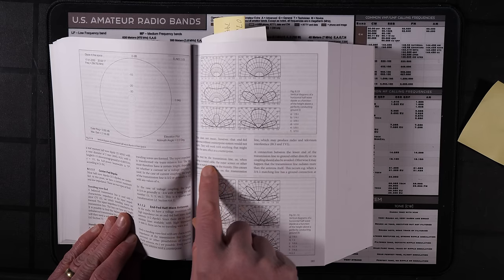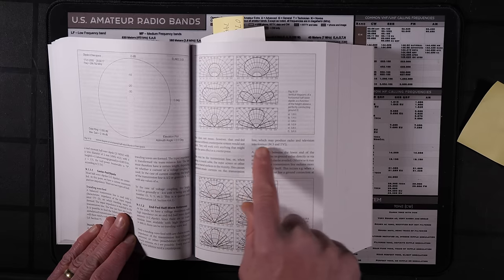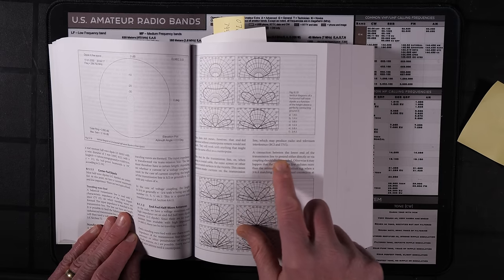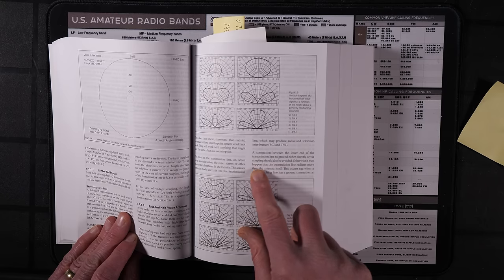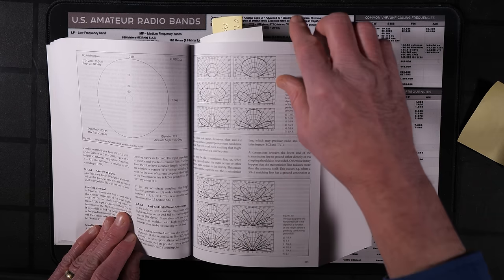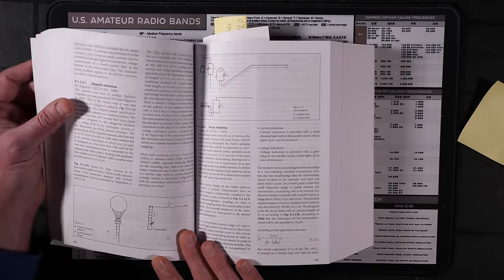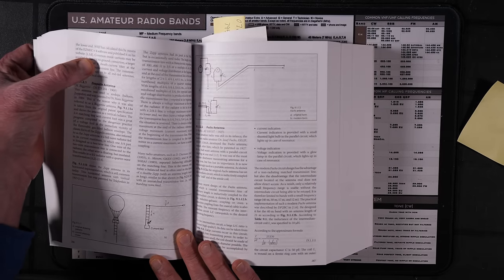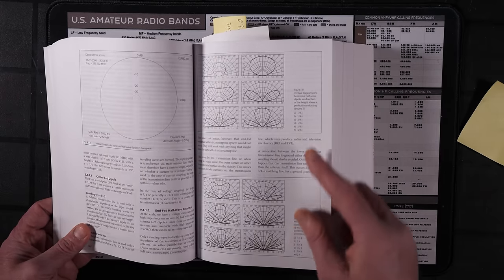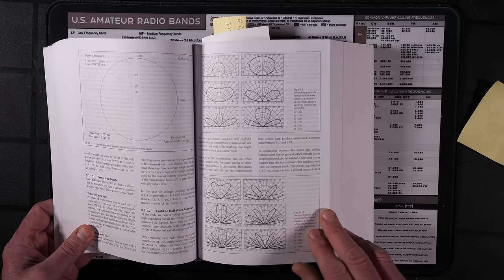Every NFED half-wave antenna needs a counterpoise. This does not mean, however, that an NFED antenna without a counterpoise system would not work. They will work with anything that might have the same effect as a counterpoise, meaning your coaxial cable, of course. Now this may be the transmission line or when using coaxial cable, the outer screen, or other lines or metal surfaces in the vicinity. This causes common mode currents of the transmission line, which may produce radio and television interference. A connection between the lower end of the transmission line to the ground, either directly or via coupling, should be avoided. Otherwise it may happen that the transmission line radiates more than the antenna itself. So, you can, the information is just a lot more sparse. It's a lot more concise, but the basic information that we found in the ARRL antenna book, we certainly find in Rothammel's antenna guide here.